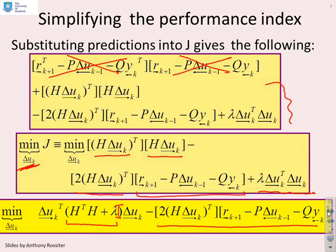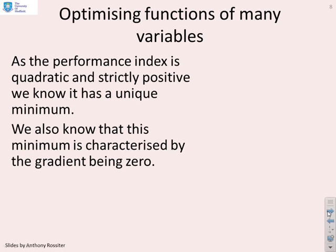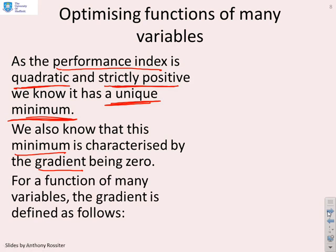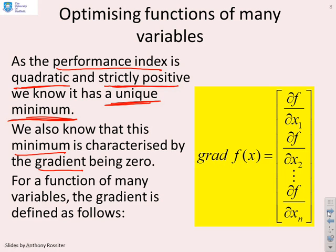We need to optimize J with respect to the future control increments. The performance index is quadratic and all terms were sums of squares, so it's positive and must have a unique minimum. That minimum is characterized by the gradient being zero. The gradient is defined as the vector of partial derivatives: partial df/dx1, partial df/dx2, and so on.